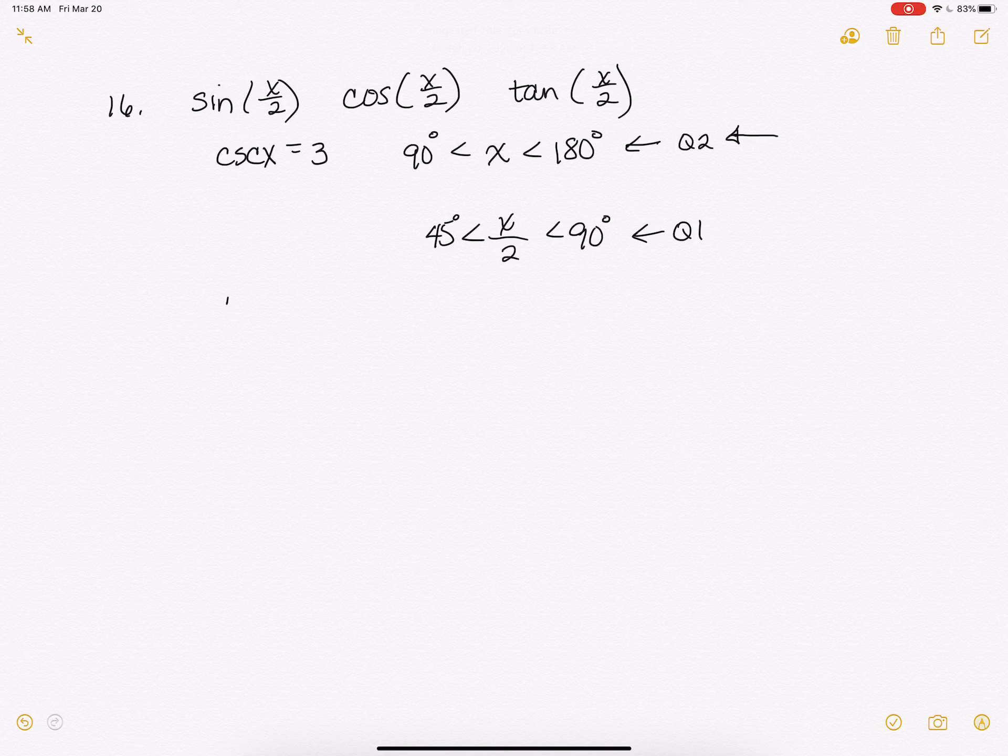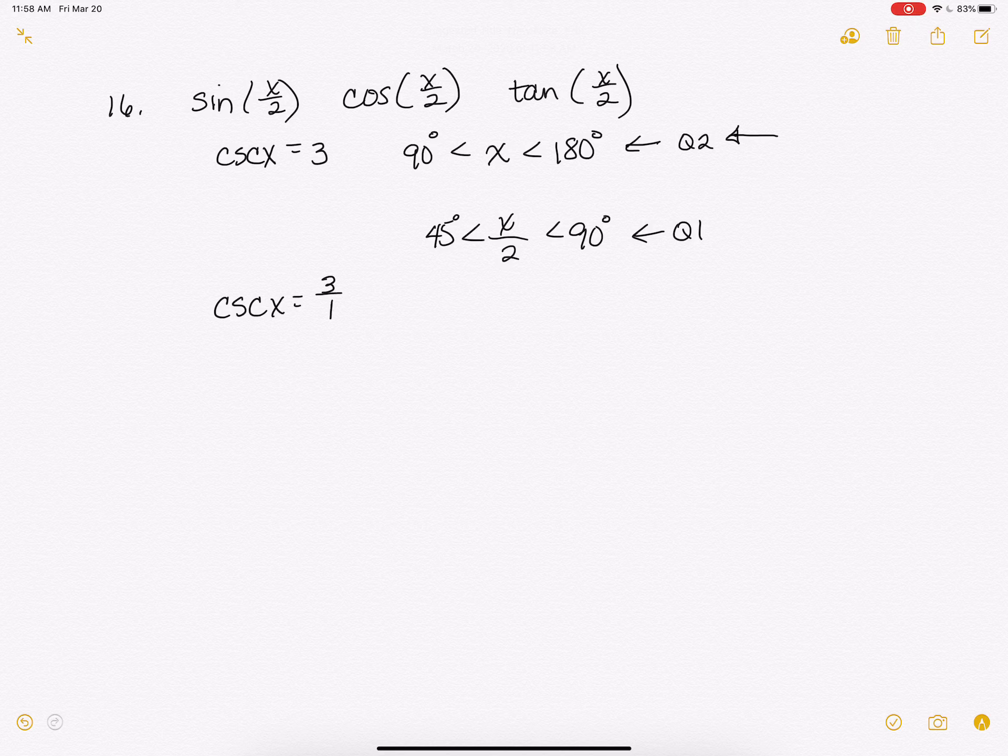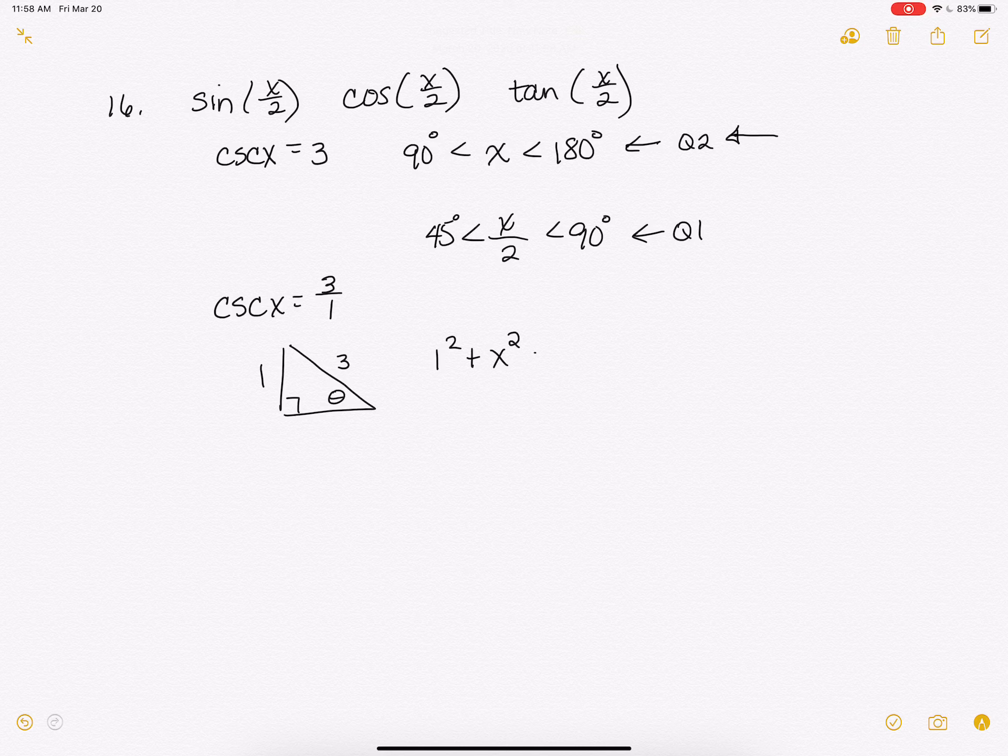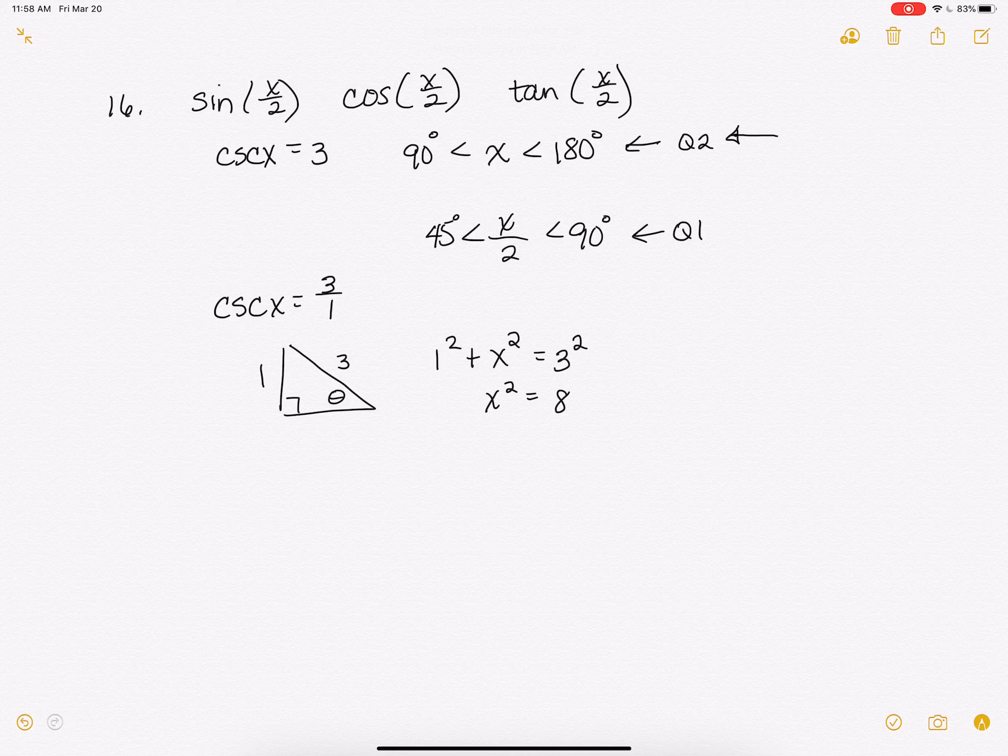Alright, so we know that the cosecant of x is 3 over 1. So when I'm trying to find my ratios, my opposite, my hypotenuse and my adjacent, when I set this up, I know that the cosecant is the hypotenuse over the opposite. So this is going to be 1 squared plus x squared equals 3 squared. So x squared in this case is going to be 8. So x is going to equal the square root of 8.